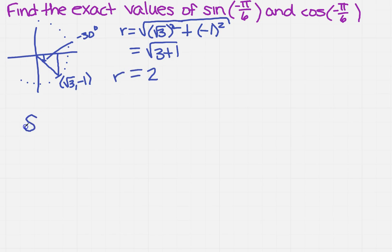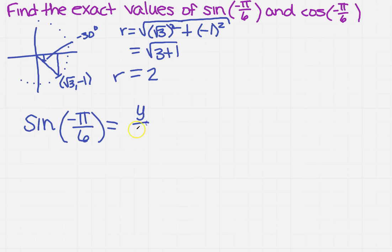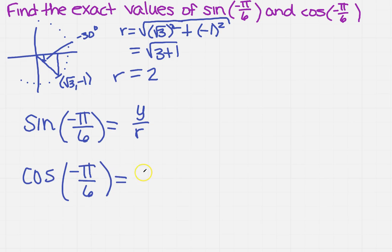Now you want to use your formula. I know that the sine of negative pi over 6 equals — remember, sine is y over r. And cosine of negative pi over 6 is x over r.